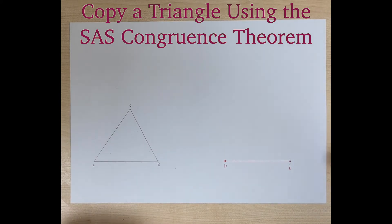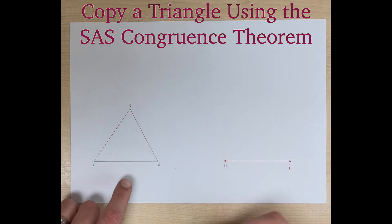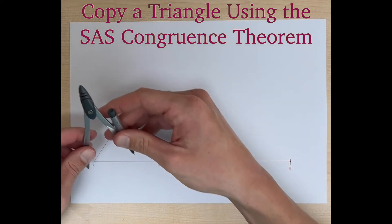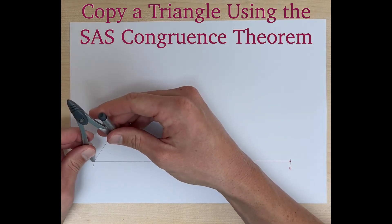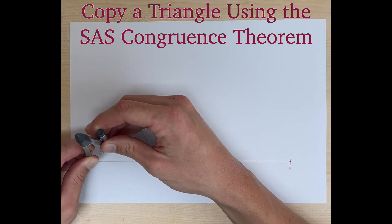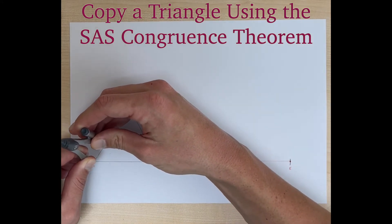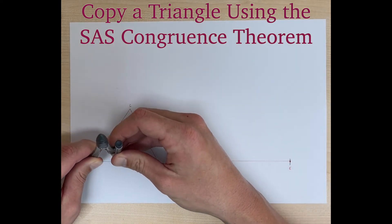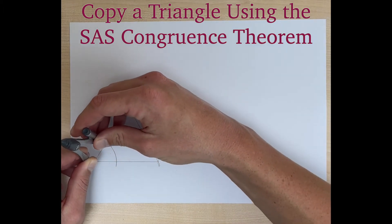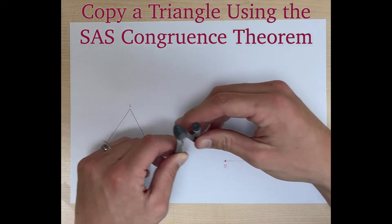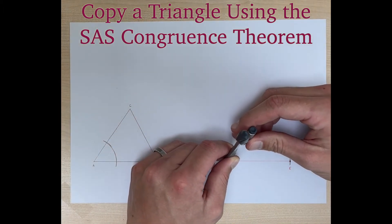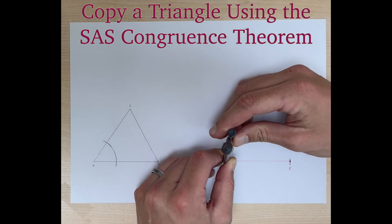Now what we're going to do is copy an angle — we're going to copy angle A. We're going to put the needle on A and draw an arc that intersects both sides of our triangle, and we're going to copy that arc over here.